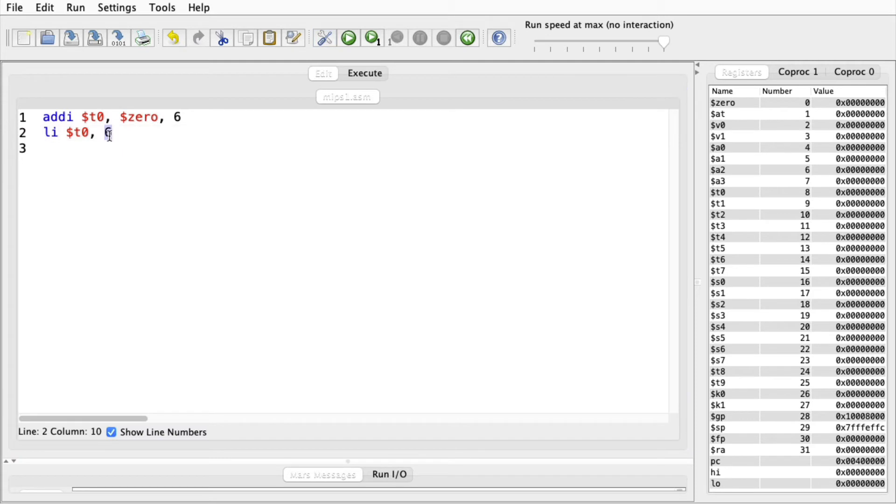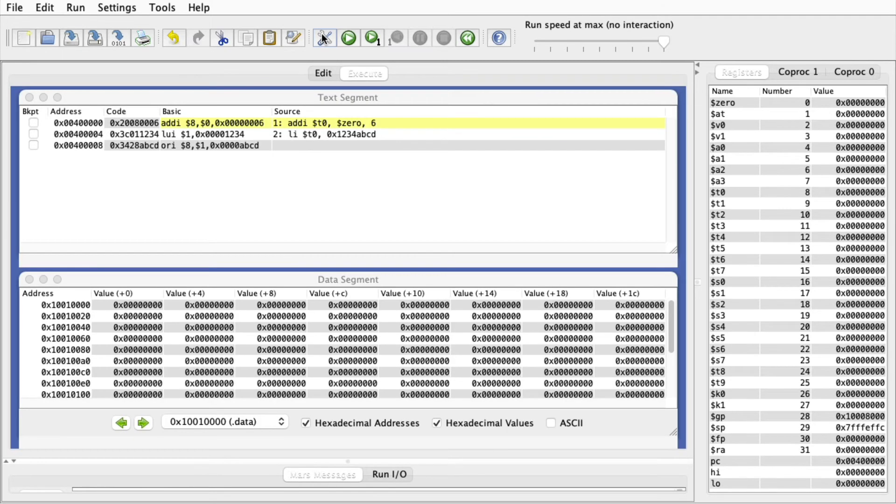So now, watch what happens when I make the constant larger than 16 bits. I'm going to enter this constant in hex so it's easier to see what happens. Notice that when I assemble the code, this LI is split into two machine instructions. Because the 32-bit constant 1234abcd doesn't fit in the 16-bit immediate field, we have to split it up and load it in two pieces.